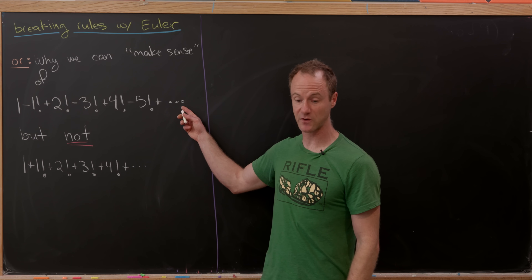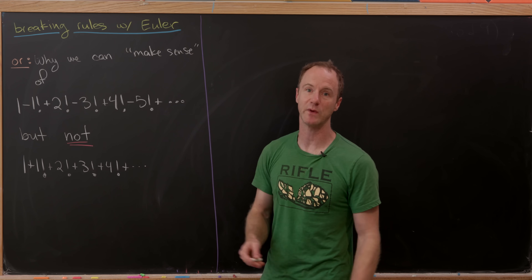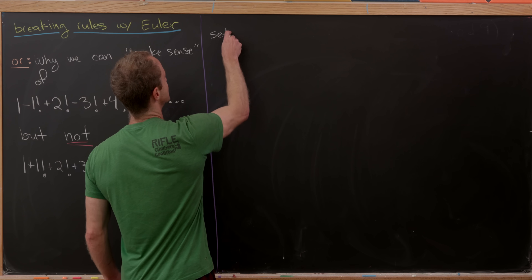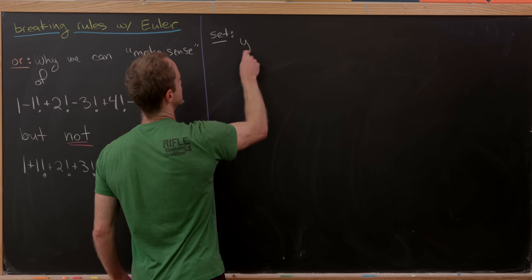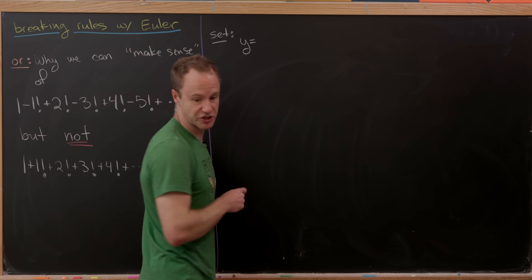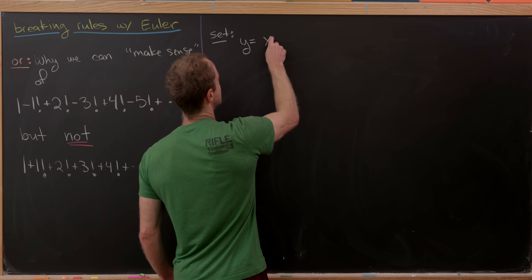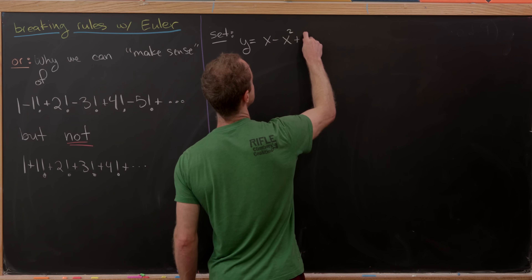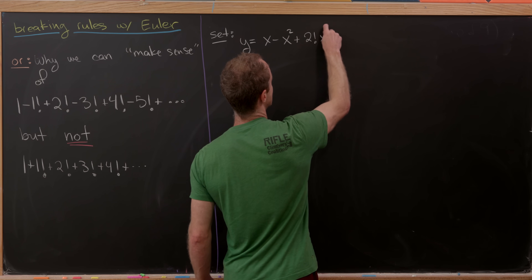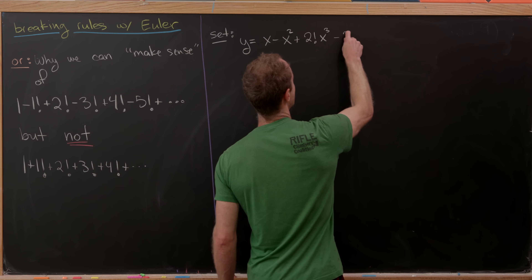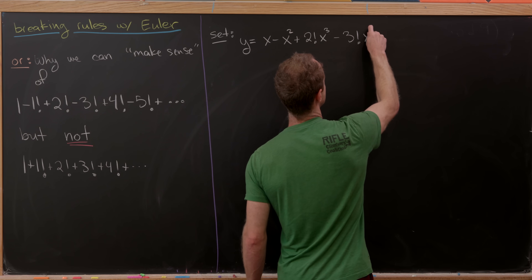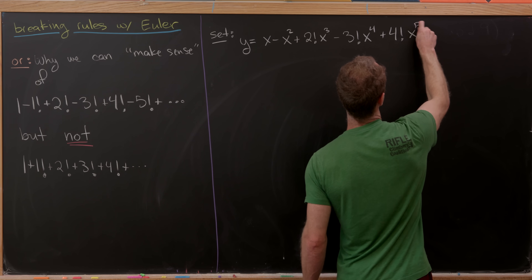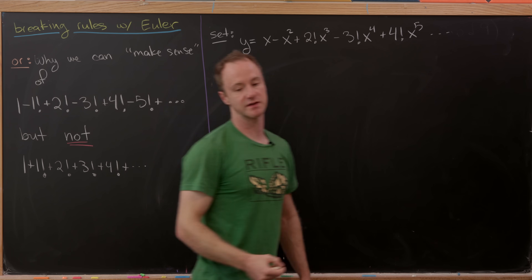We're going to investigate the first one — the one we can assign a value to. So let's introduce a variable. We'll set y equal to x minus x squared, plus two factorial times x cubed, minus three factorial times x to the fourth, plus four factorial times x to the fifth, and so on.